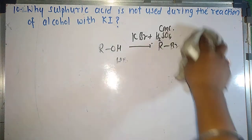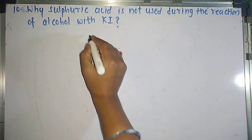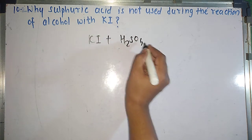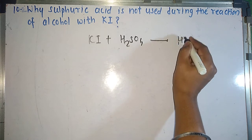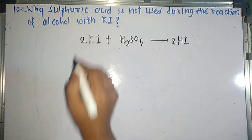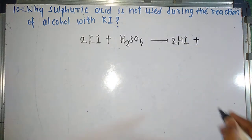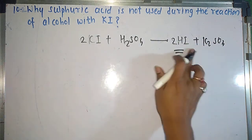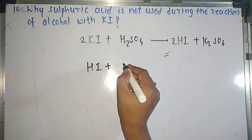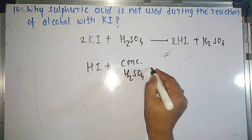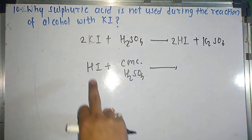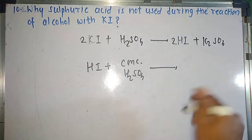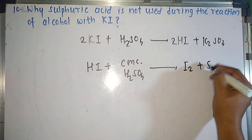So we do get HI from this reaction, no doubt. But the problem is that HI is a very good reducing agent and sulfuric acid is a very good oxidizing agent. So the HI produced will further react with the excess sulfuric acid and get converted into I₂, SO₂, and H₂O. We were expecting HI to be produced from KI and H₂SO₄, but as soon as HI is produced, it immediately gets oxidized to I₂.